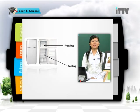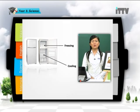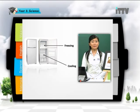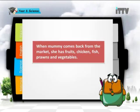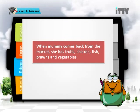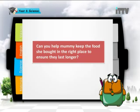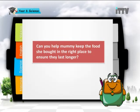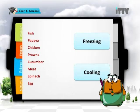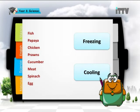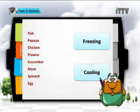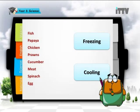When you see ice inside the fridge, that part is for freezing. Freezing and cooling help your food to last longer — it is another method of food preservation. When mummy comes back from the market with fruits, chicken, fish, prawns, and vegetables, can you help sort the food into the fridge in the right place to ensure they last longer?